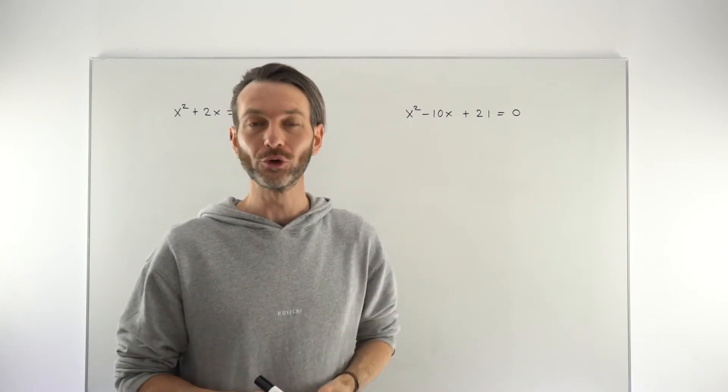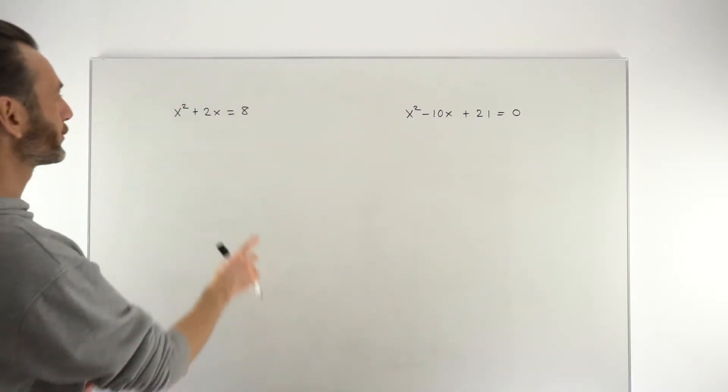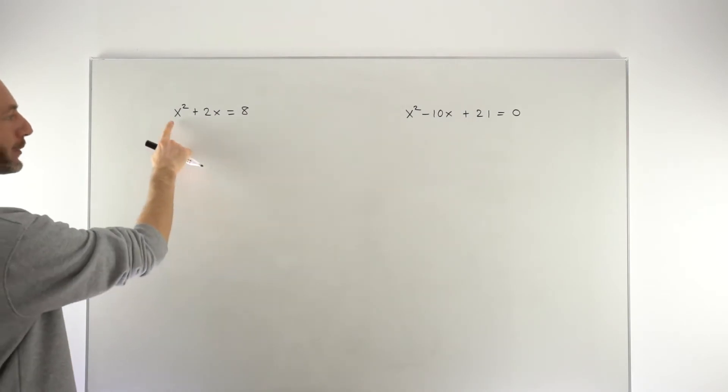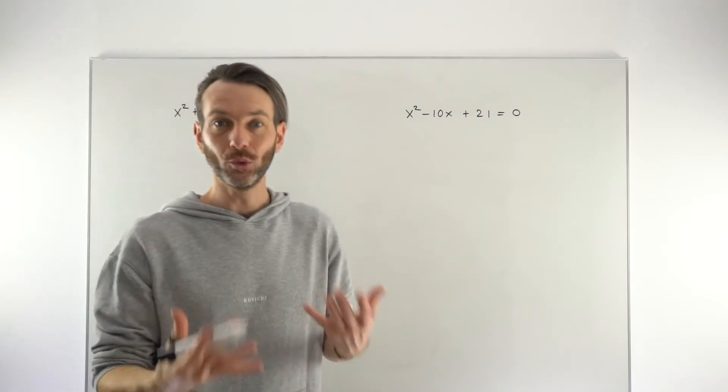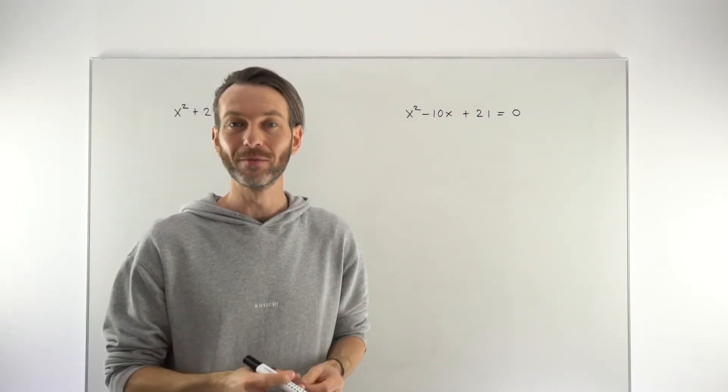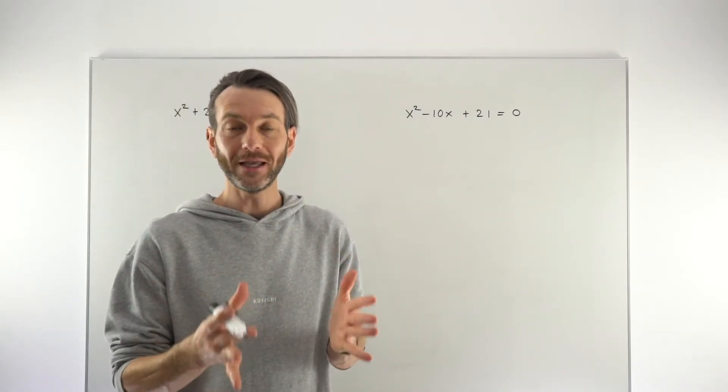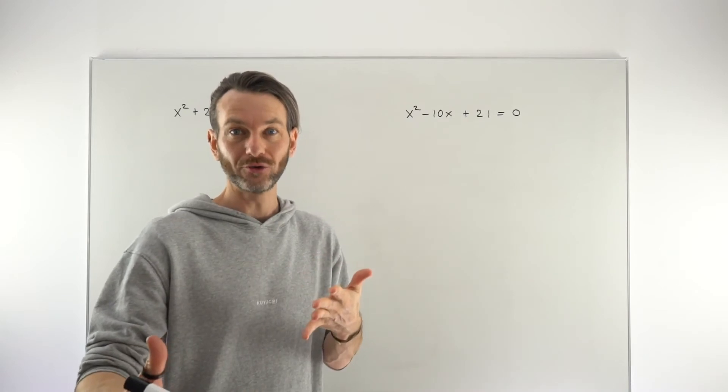Well there are a few methods for solving them but the algebraic method is factorising. So students will often remember that. They'll see an equation like this and they'll say hey that's an x squared equation, that's a quadratic. They might not be able to name it but they'll know that it's a type of equation that involves some kind of factorising method.